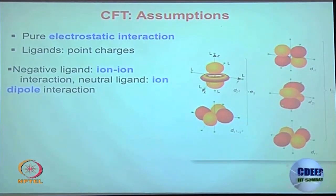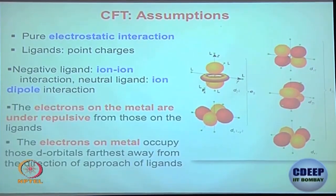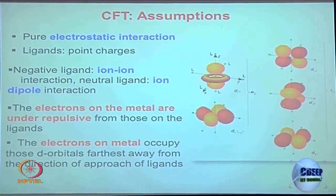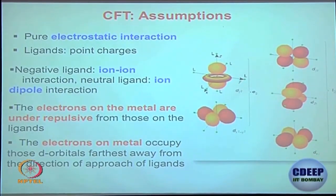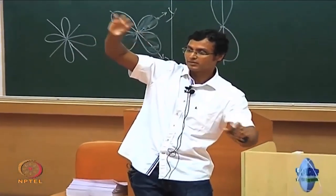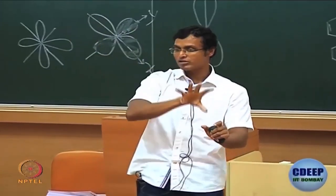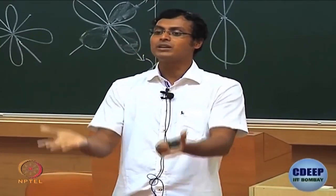Previously in valence bond theory we were thinking only about covalent interaction. Now in crystal field theory, if you think about the metal — the metal has electrons — and if you bring the ligand, the ligand also has electrons. So the ligand electrons and the metal electrons are going to repel each other because they carry the same charge, even though overall the metal is positive and the ligand is negative.